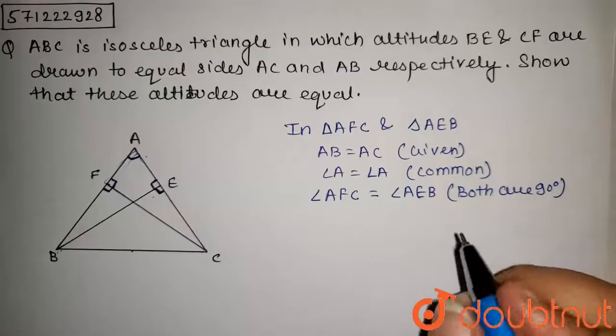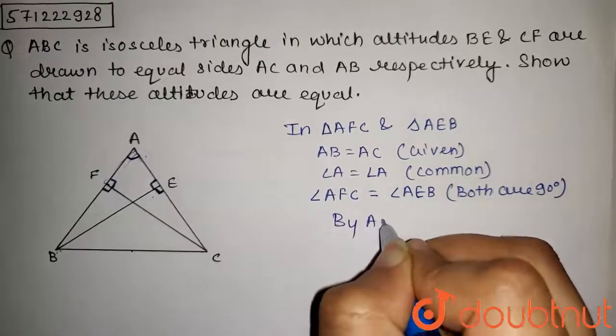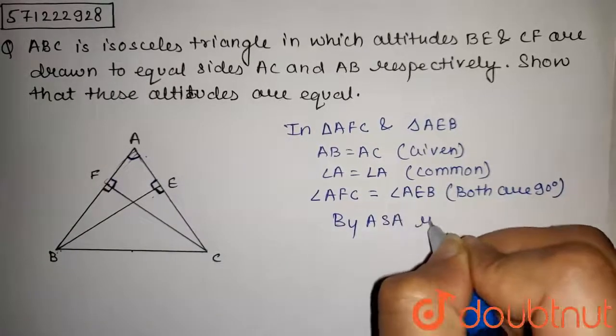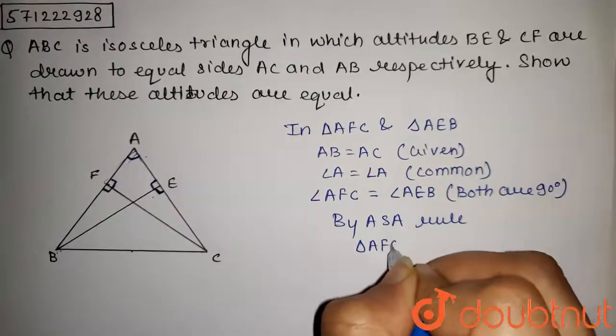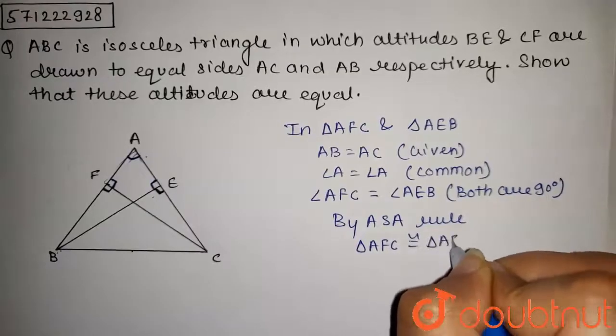So from this we can say that by angle-side-angle rule, triangle AFC is congruent to triangle AEB.